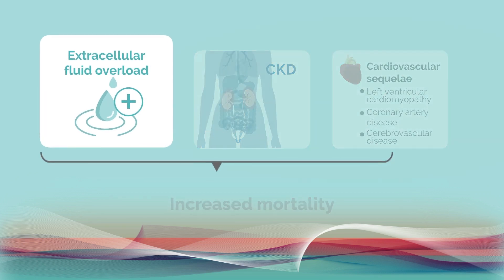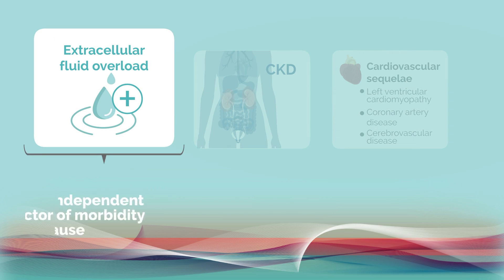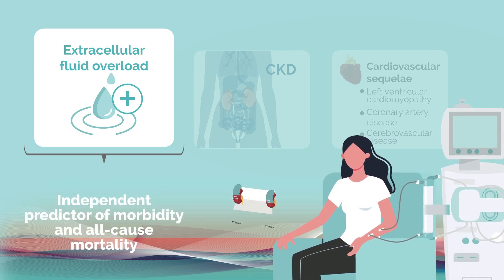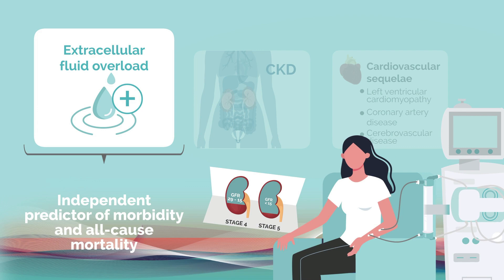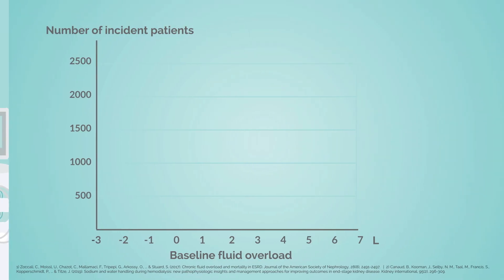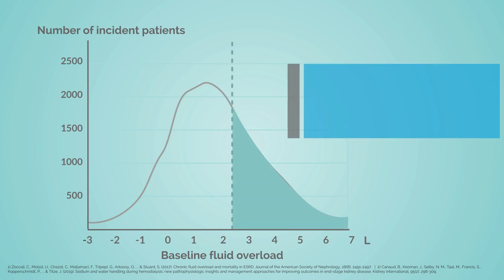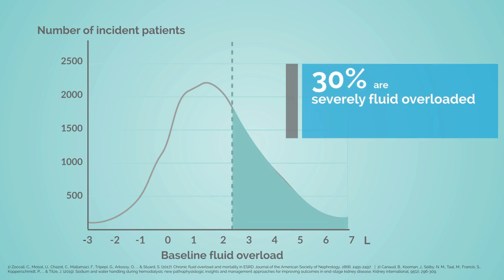The cardiovascular sequelae associated with CKD and fluid overload are recognized to increase mortality. Additionally, fluid overload is an independent predictor of morbidity and all-cause mortality in patients with CKD of stages 4 to 5. Zockely and colleagues demonstrated that approximately 30% of hemodialysis patients are severely fluid overloaded, defined as a fluid overload volume of greater than or equal to 2.5 liters.